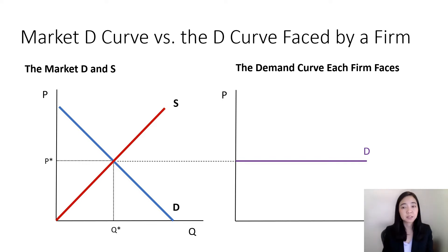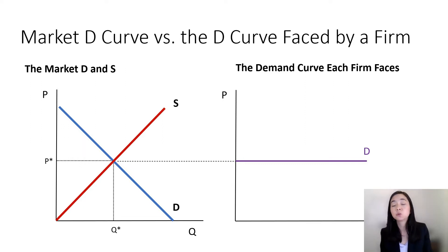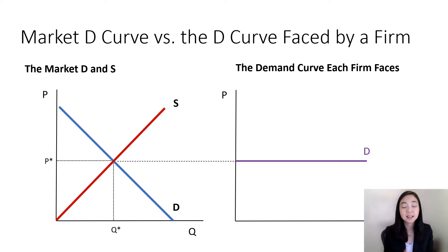There is no need to lower the price to sell more. Why? Because each firm is small and insignificant. Given the current price, your firm can sell as many units as it wants without lowering the price. At the same time, your firm cannot increase the price, because if you raise the price even a tiny bit, all your buyers will switch to other sellers who are selling exactly the same product at price P-star. Therefore, you cannot change the price.